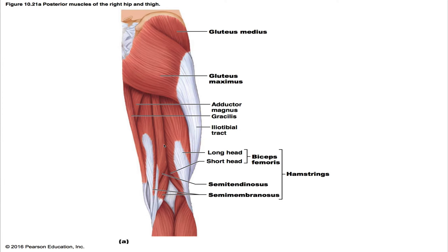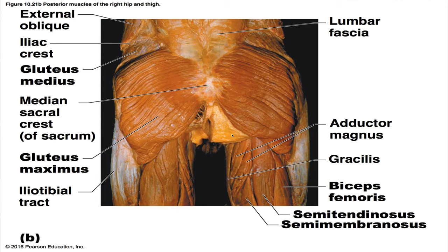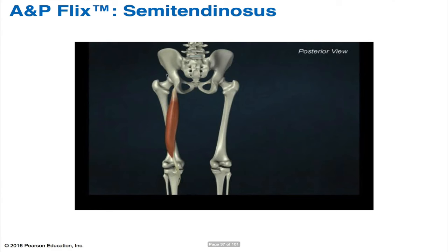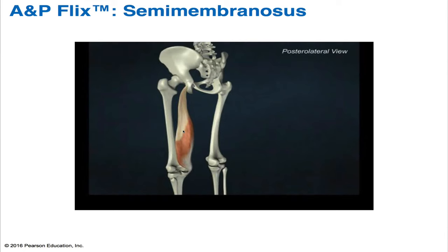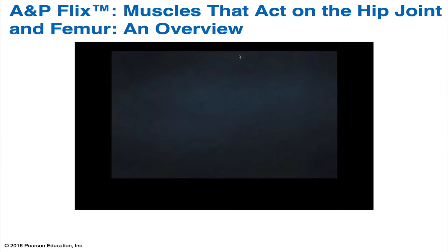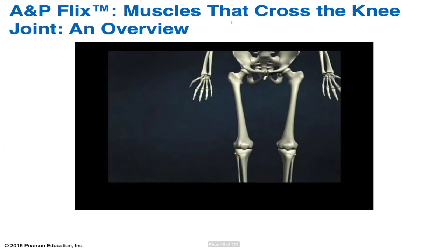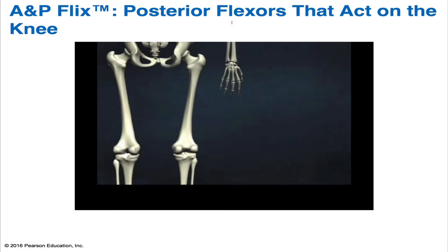The semimembranosus lies deep to the semitendinosus. Its origin is the ischial tuberosity, and its insertion is the medial condyle of the tibia and via the oblique popliteal ligament to the lateral condyle of the femur. Its prime action is to extend the thighs and flex the knees; it also medially rotates the leg, and is innervated by the tibial nerve. In the cadaver photograph you can see the semitendinosus, semimembranosus, and biceps femoris. Be sure to view the animations for the biceps femoris, semitendinosus, semimembranosus, the overview of muscles acting on the hip joint and femur, movements at the hip joint, anterior muscles crossing the hip joint, muscles crossing the knee joint, posterior flexors acting on the knee, and movements at the knee joint.